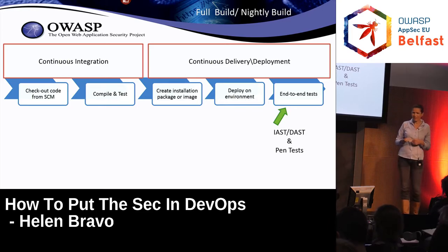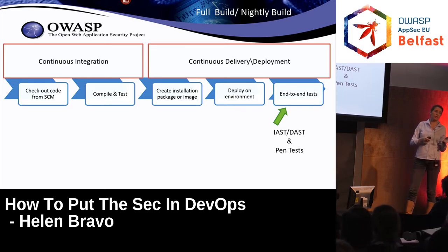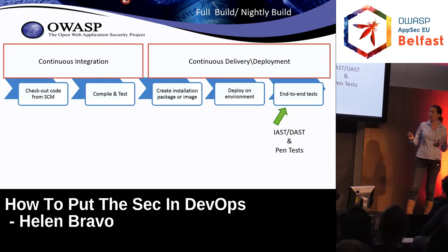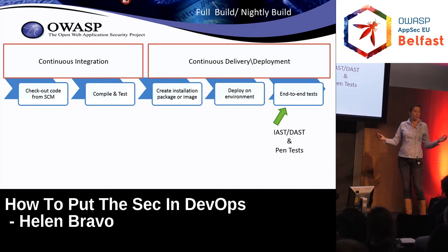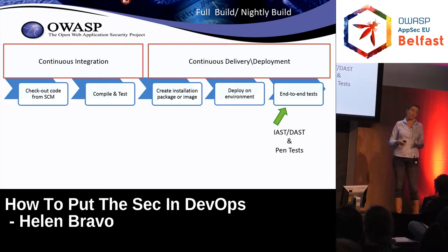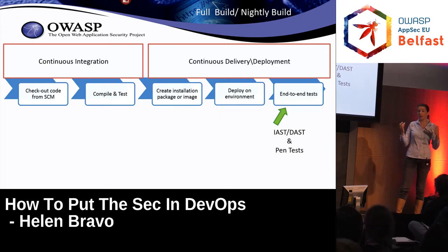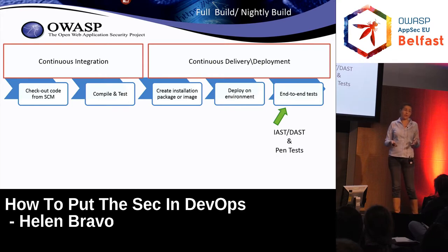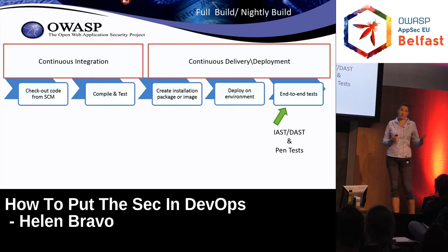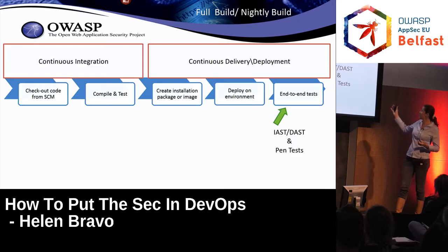End-to-end tests differ greatly for those doing continuous deployment versus continuous delivery. If you are not practicing continuous deployment, you can afford doing penetration testing. Penetration testing depends on the deployment environment — you can set aside separate environments. For an on-prem application released every two or three months, you can put aside a separate system and run penetration testing on each version without stopping the CD pipeline.